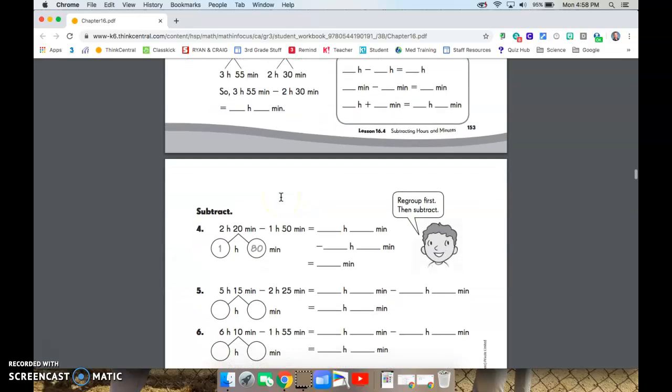Now, they're not always that simple. Sometimes we won't have enough minutes, so we're going to have to regroup first and then subtract. So this one here, you can see two hours and 20 minutes is the same as one hour and 80 minutes. So what they did is they took one of the hours away and they made 60 minutes plus that 20 to get the 80. So one hour and 80 minutes minus one hour and 50 minutes is 80 minus 50, 30 minutes.